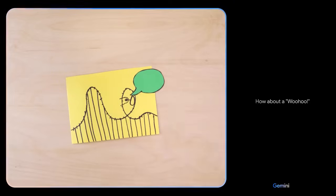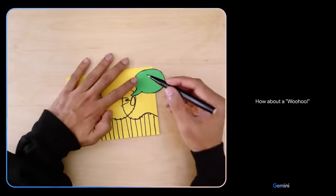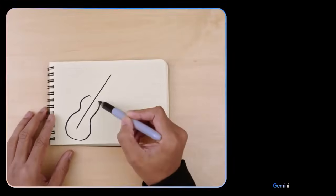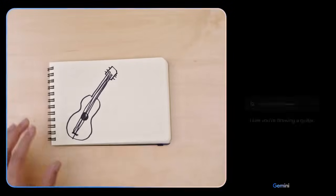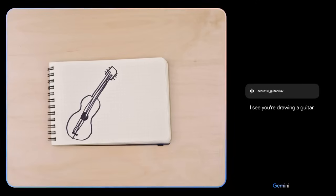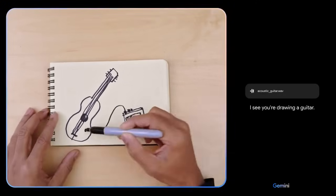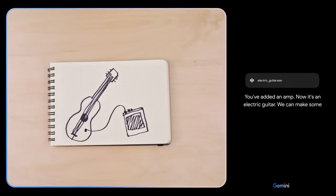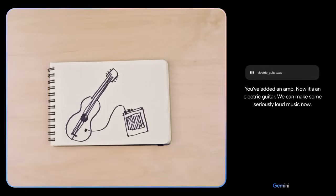What do you think this person might be saying? How about a woohoo? Oh, I love that. I see you're drawing a guitar. You've added an amp. Now it's an electric guitar. We can make some seriously loud music now.